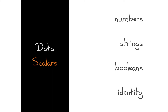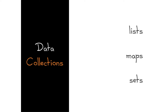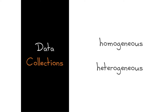That's really abstract, so let's talk about something more concrete. Data are scalars — things like numbers, strings, booleans, some form of identity. And it's collections. Collections really come down to three things: lists give you a semantic of order, maps give you the semantic of association — a key-value association — and sets give you the semantics of mathematical membership. You can split it further and say some collections are homogeneous and some are heterogeneous, and we'll look into why that's important later.